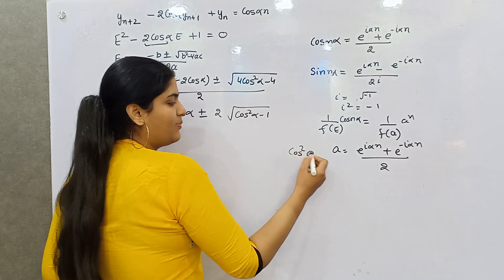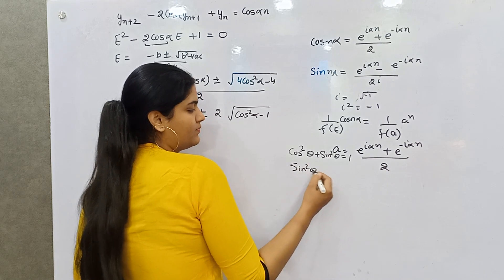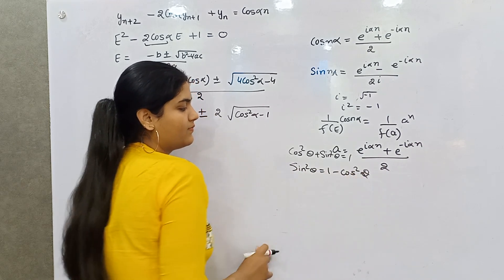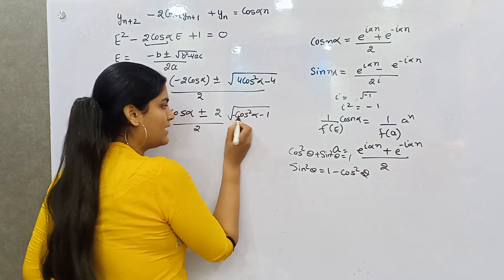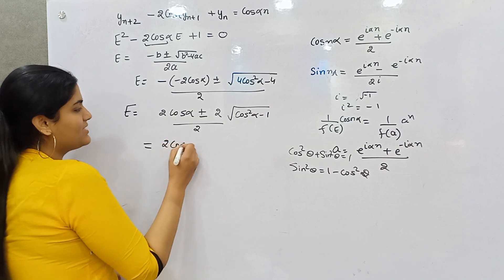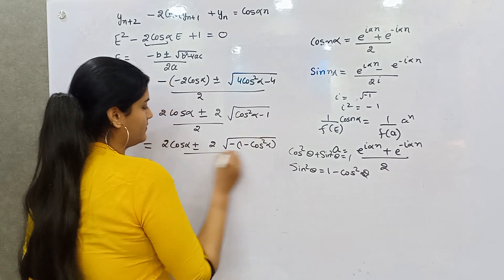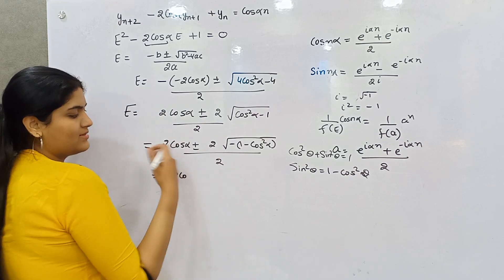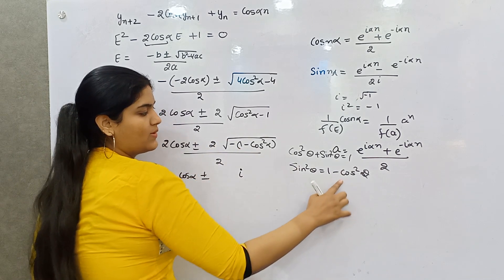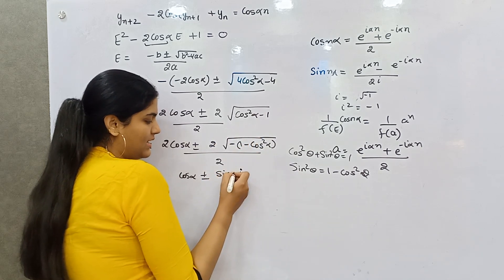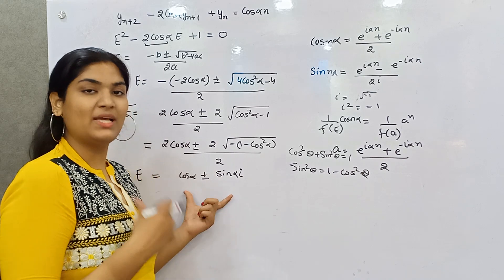Using the identity cos²θ + sin²θ = 1, we get sin²θ = 1 - cos²θ. So √(cos²α - 1) = √(-(1 - cos²α)). Taking minus common gives √(-sin²α), which outside the root becomes i·sinα. So the roots are cosα ± i·sinα — these are complex and distinct roots.